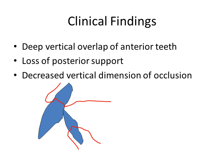We check the patient's closest speaking space by asking the patient to repeat the word 'Mississippi' and observe the amount of space between the anterior teeth. We may also make an occlusal therapy appliance using acrylic to restore the patient to the correct vertical dimension.